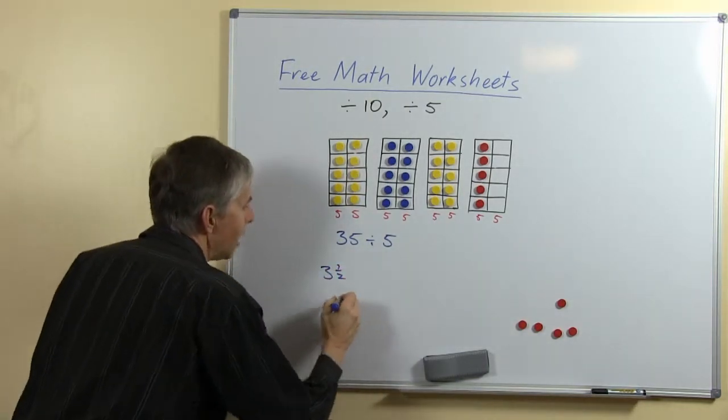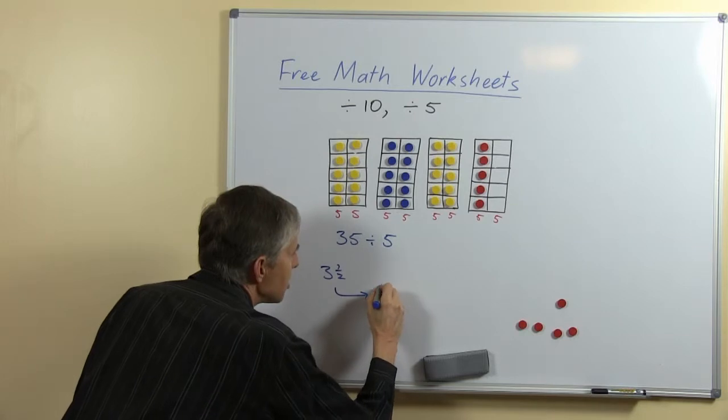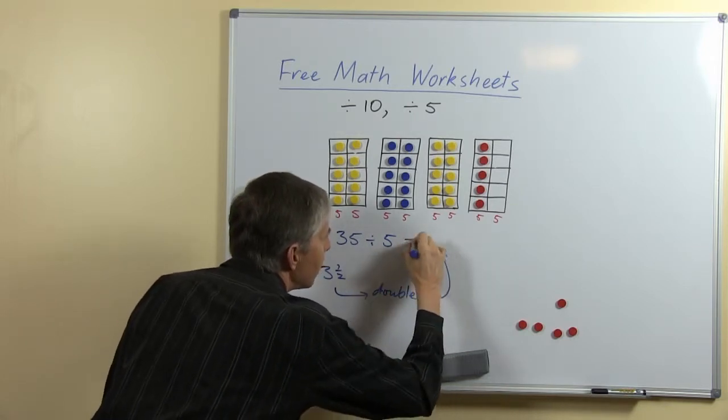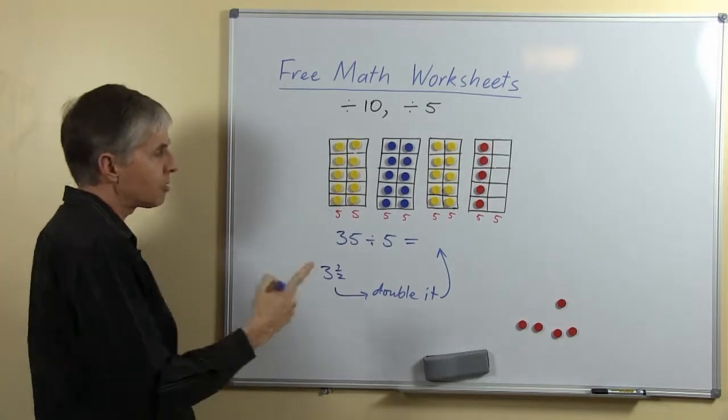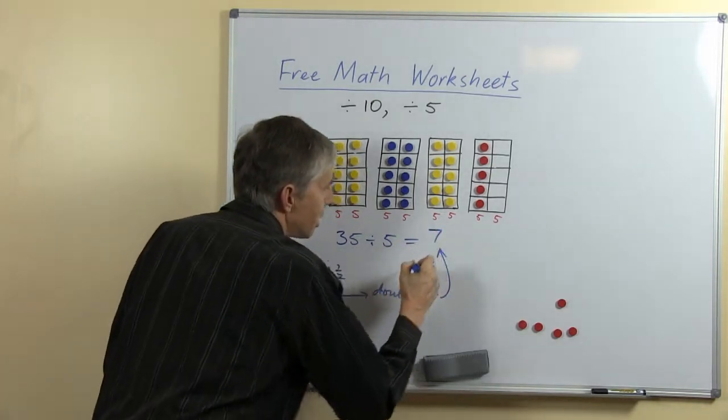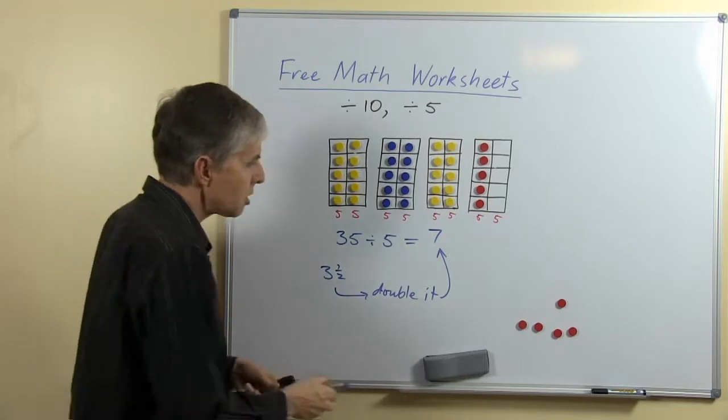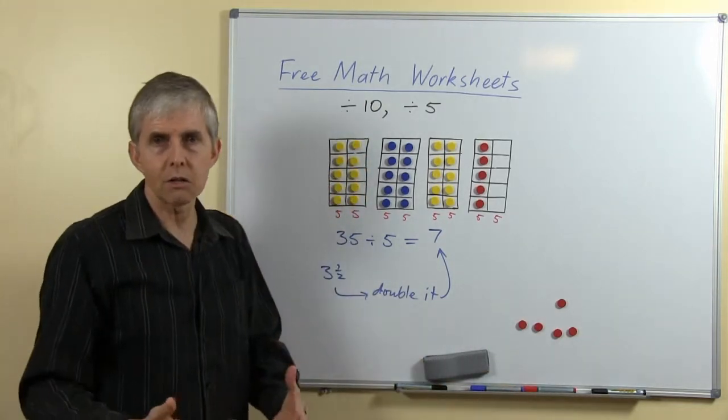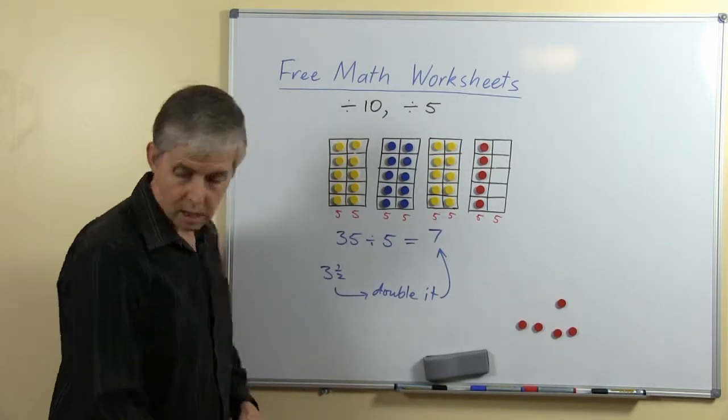So what if we took 3 and a half and double that, what will we get? Well double 3 is 6, double a half is 1, so of course double 3 and a half is 7. So the strategy works whether it's a number ending in 0 or a number ending in 5, none of that's too difficult.